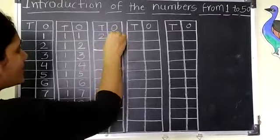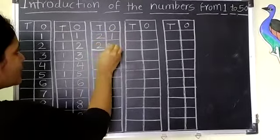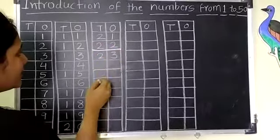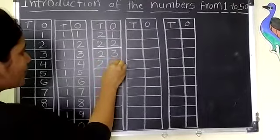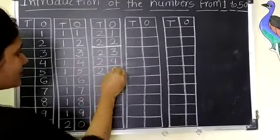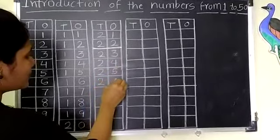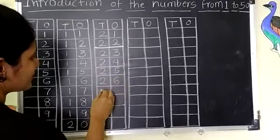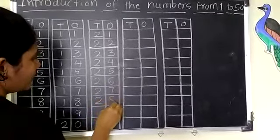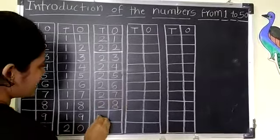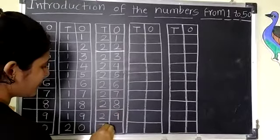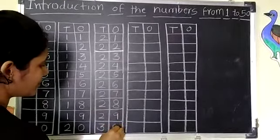2, 1, 21. 2, 2, 22. 2, 3, 23. 2, 4, 24. 2, 5, 25. 2, 6, 26. 2, 7, 27. 2, 8, 28. 2, 9, 29. 3, 0, 30.